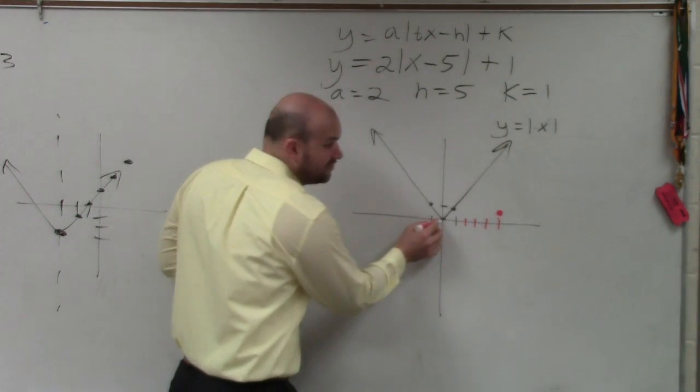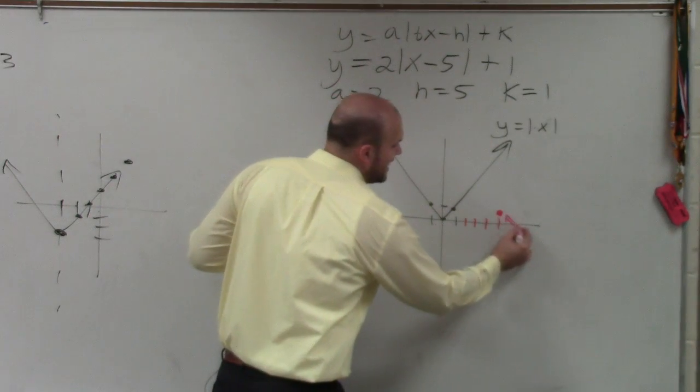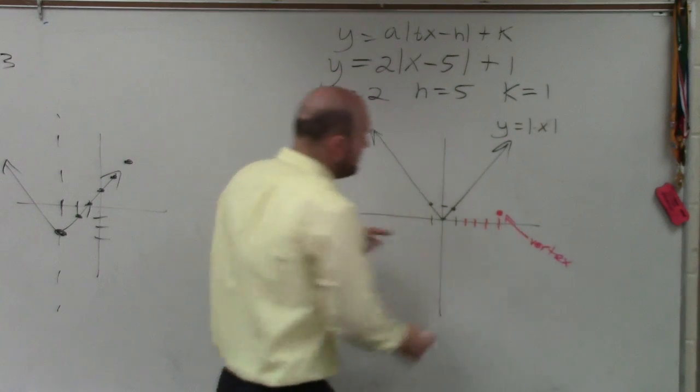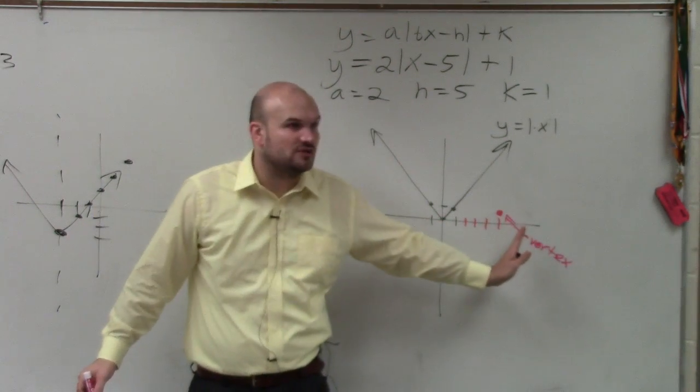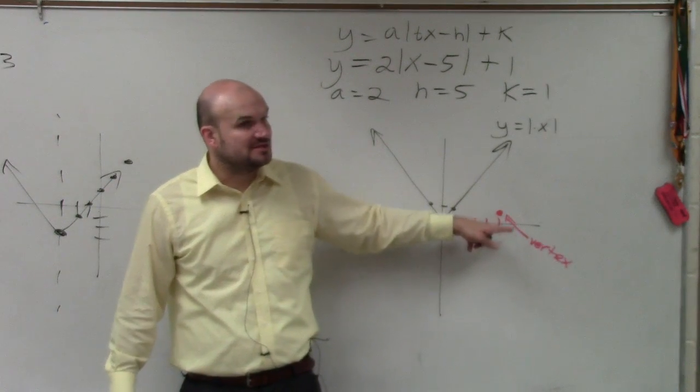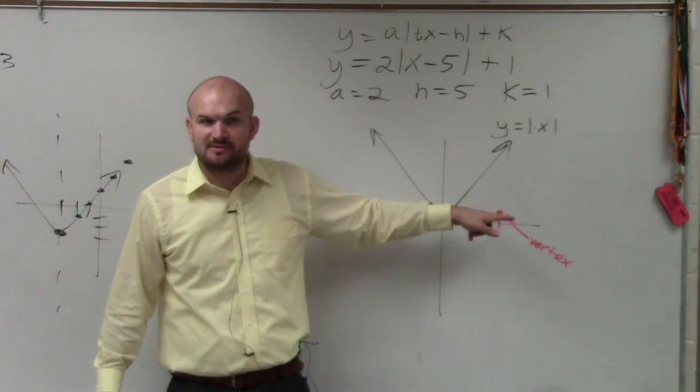So now, where my old vertex is, now I have my new vertex. Do you guys see how my vertex has been shifted 5 units to the right and up 1 unit? It originally was at 0, 0. I've shifted it 5 units over and 1 unit up. Does everybody see that?